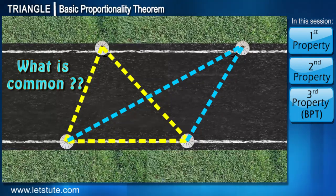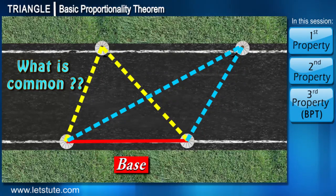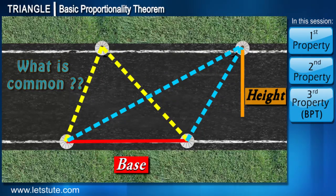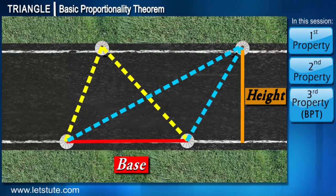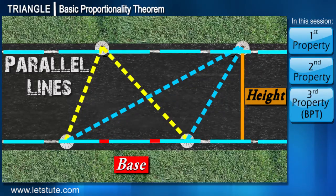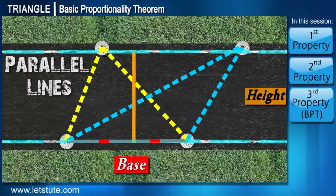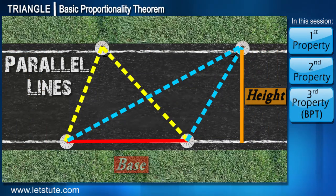By looking at the diagram, can you tell me what is common between these two triangles? They have a common base. Height is also common, because if we see the boundary of the road they form parallel lines, and the distance between two parallel lines is always constant. Therefore height and base are the same for these triangles.